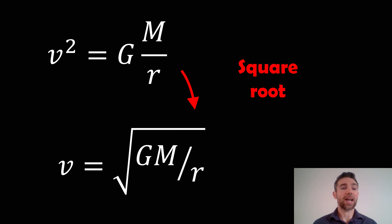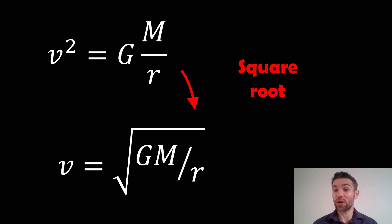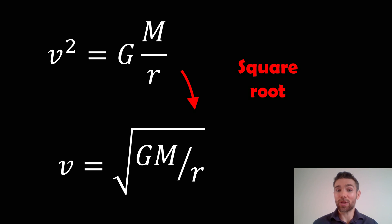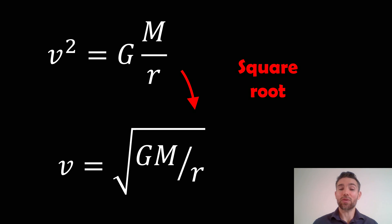Once we've done that, we can take the square root of both sides and we end up with the orbital velocity for a circular orbit. That's going to be equal to the square root of GM over R, where G is the gravitational constant, M is the mass of the larger object that it is orbiting — in the case given here, that would be the Sun — and R is the orbital radius or the semi-major axis.